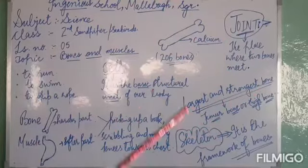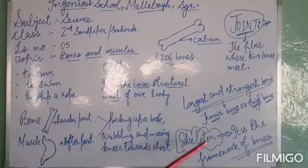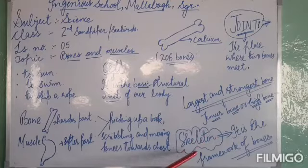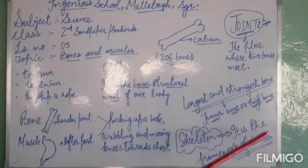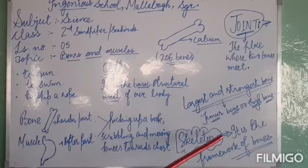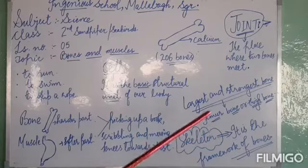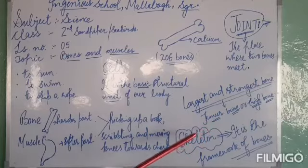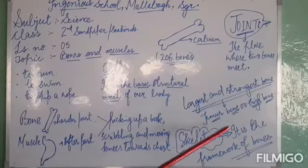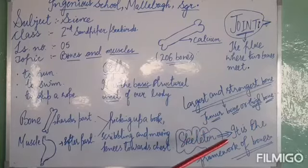All the bones of our body join together to form a skeleton. What is a skeleton? A skeleton is the framework of bones. The skeleton helps us to move and protects the soft internal organs of our body, like our brain, our lungs, and our heart.